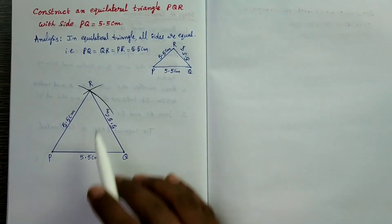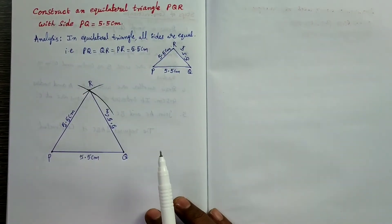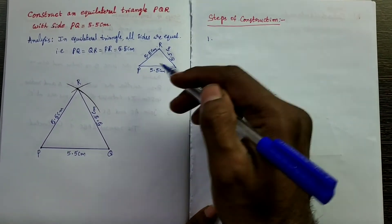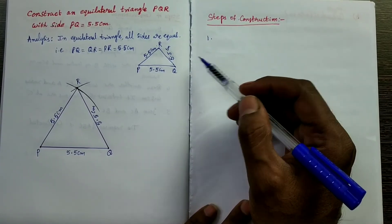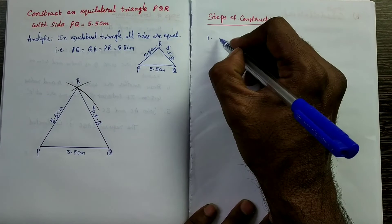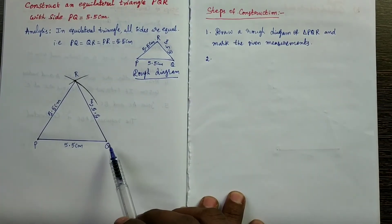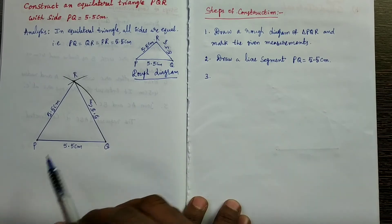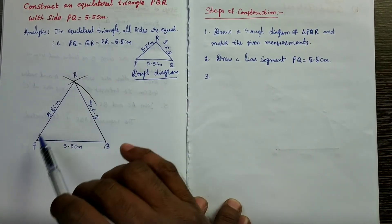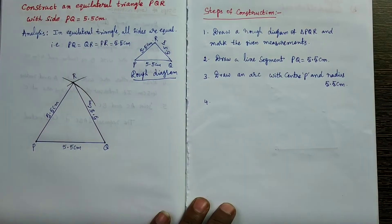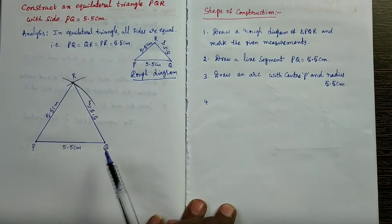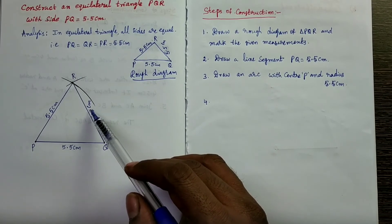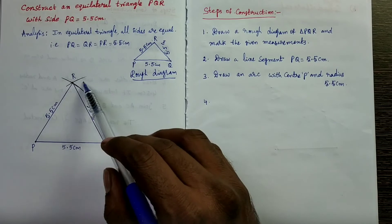This is the construction of the required equilateral triangle PQR. The steps of construction are: Step 1 — draw a rough sketch of the given triangle and mark the given measurements. Step 2 — draw a line segment PQ equals 5.5 cm. Step 3 — draw an arc with center P and radius 5.5 cm.